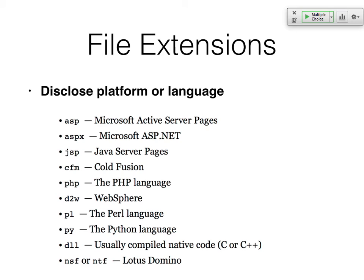The extensions of files will tell you what's going on. ASP is Microsoft Active Server Pages, JSP is Java, then there's ColdFusion, PHP, Perl, Python. DLLs, if you see them, are compiled code running on Microsoft operating systems. If you know these, you can just look at the URL and tell what technology is being used.